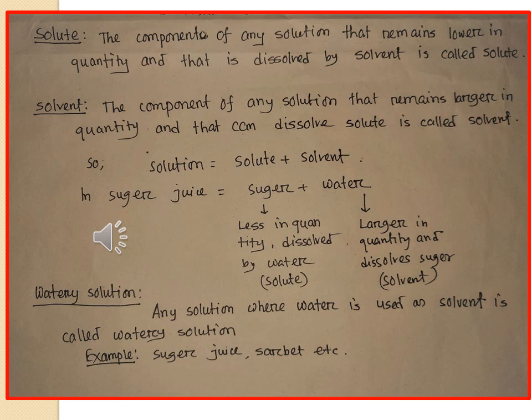Solvent is the component of any solution that remains larger in quantity. Each and every solvent should have the capability to dissolve any solute. We can consider the example of sugar juice: sugar is used less in quantity and is dissolved by water, so sugar is the solute here. Water is used in larger quantity and dissolves the sugar, so water is used here as a solvent.